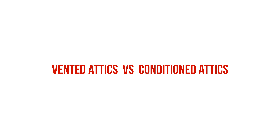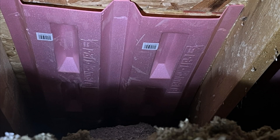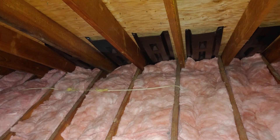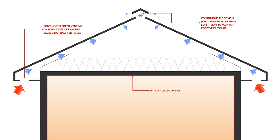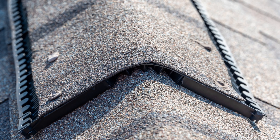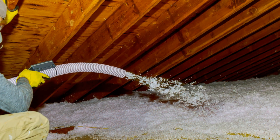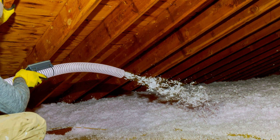First, let's talk about vented versus conditioned attics. Vented attics tend to be the most common type of attic space. We have a bunch of soffit venting bringing in outside air into our attic space, and we're venting the attic with a ridge vent, and we're insulating the attic floor, usually with a blown-in insulation like fiberglass or cellulose.